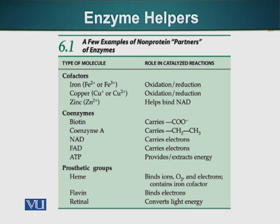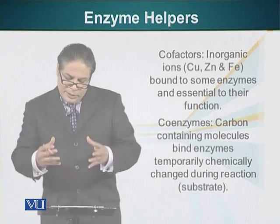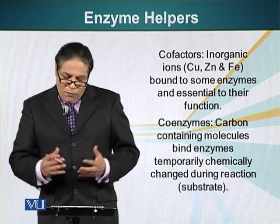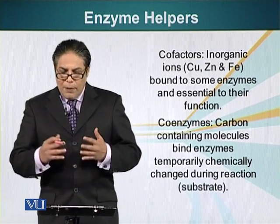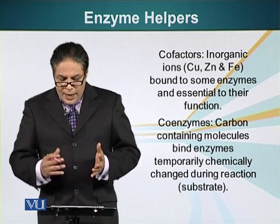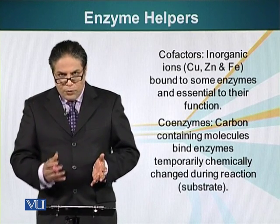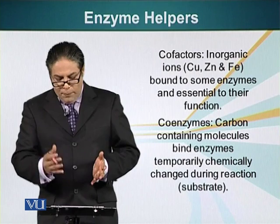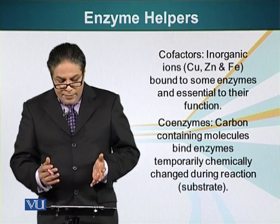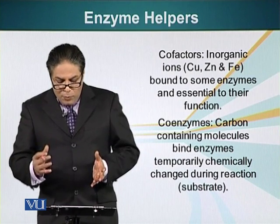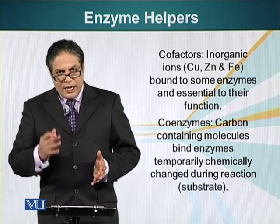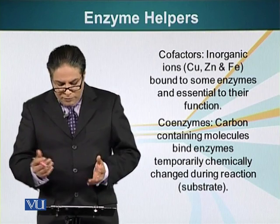So what is the difference between these different categories? Cofactors are basically inorganic ions. For example, we talked about copper, zinc, and iron. They are bound to some enzymes and are essential for their function.